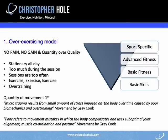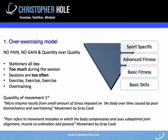Our body doesn't like volatility — it doesn't like going from stationary to all-out maximum. The vast majority of people don't do a good quality warm-up, so they are literally going from one extreme to another. As you can see on the pyramid, you've got basic skills, basic fitness, advanced fitness, and sports specific. People's foundation of basic skills is very low, yet they spend most of their time doing sports-specific training.